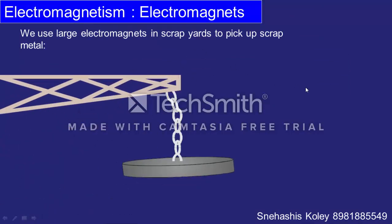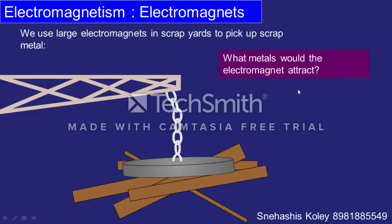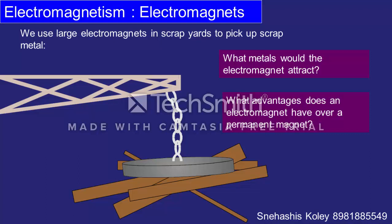Another example of electromagnets is the magnetic or electric crane. With the help of a magnetic crane, heavy loads like iron scraps, cars, etc. can be lifted by passing current through the electromagnet. The crane moves the load to the desired place and when the current is stopped, the heavy load falls at the desired place. The advantage of an electromagnet over a permanent magnet is that the electromagnet can be demagnetized by cutting off the current, allowing the load to be released precisely where needed.